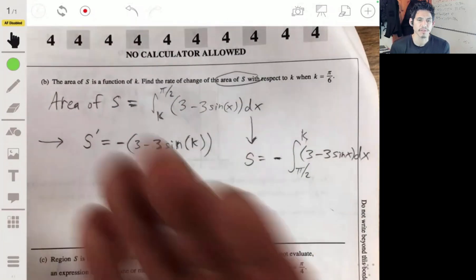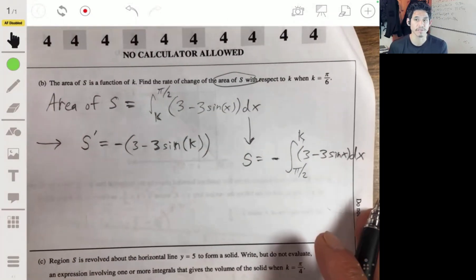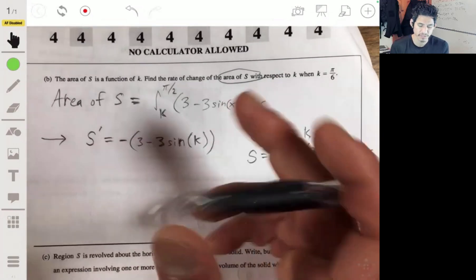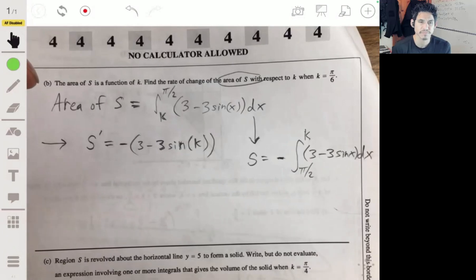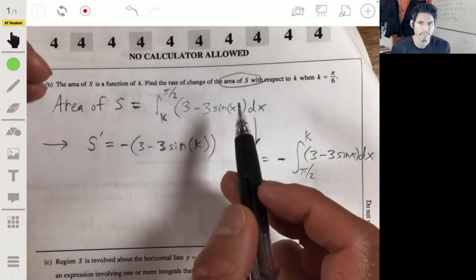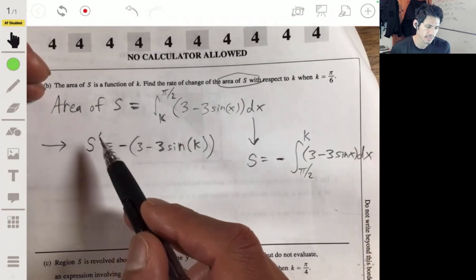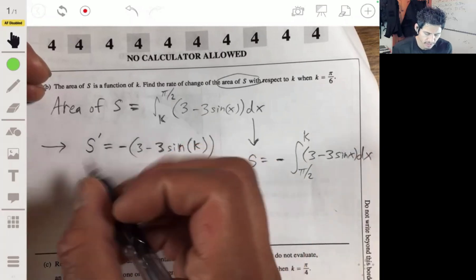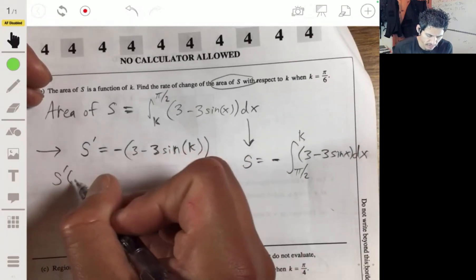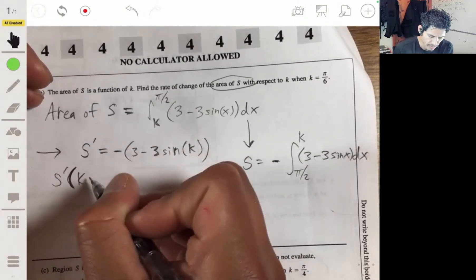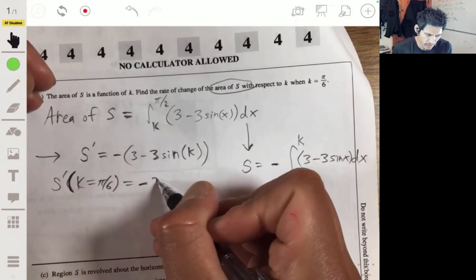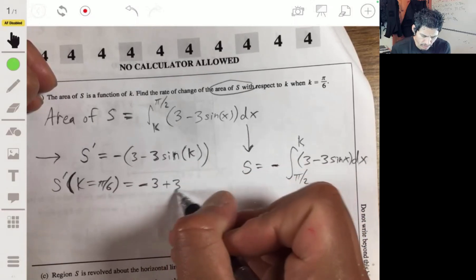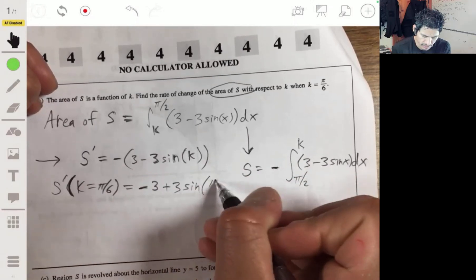How are you supposed to come up with that? You're probably thinking, you gotta just know your stuff. There's probably other more tedious ways, but this is the fastest way. So, then here, then we just evaluate this. Plug in k equals pi over 6. So, we're going to evaluate S prime of k being equal to pi over 6. So, we'll get negative 3 plus 3 sine of pi over 6.